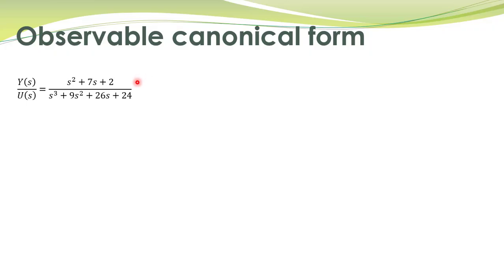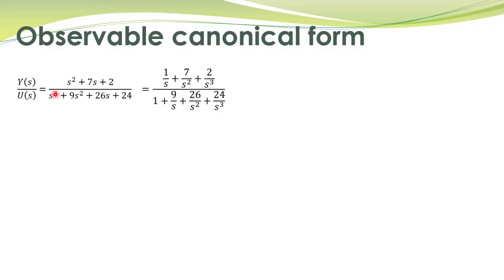To obtain the observable canonical form representation of this transfer function, we rewrite the transfer function in another format. We divide both the numerator and the denominator by s³. So s³ divided by s³ is 1, and 9s² divided by s³ is 9 over s. Likewise, all other terms in both the denominator and numerator are divided by s³.